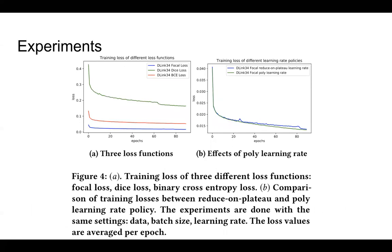In the experiments, we compare three different loss functions: focal loss, dice loss, and BCE loss. As shown in Figure 4a, focal loss achieves better convergence than the other two loss functions. Figure 4b shows the effect of our cyclic learning rate, which has a smoother decrease in training loss compared to the traditional reduce-on-plateau learning rate.